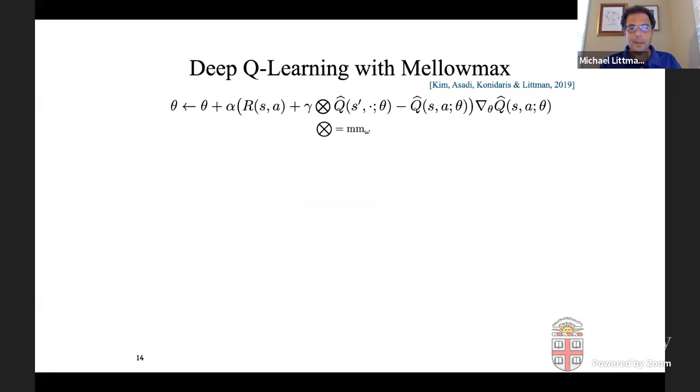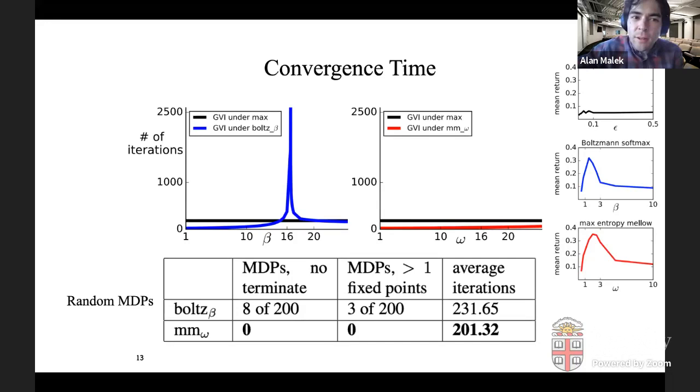Yeah. Sorry. There was one question. Oh, that's why. Yeah. And the question is if the fixed point from Mellowmax relates to the fixed point from Boltzmann in some way and characterizable way.